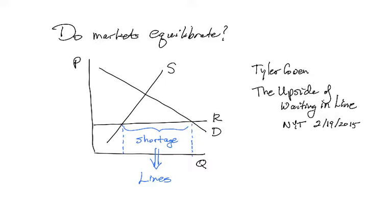And one of the things that happens in shortages, as Tyler points out in the very first line of his article, is long lines.